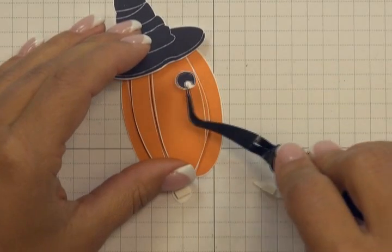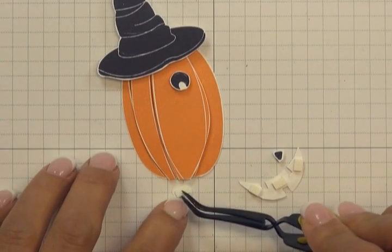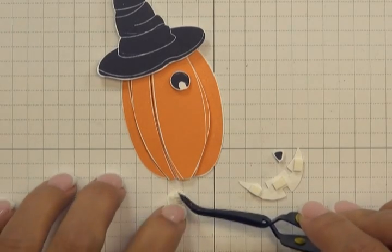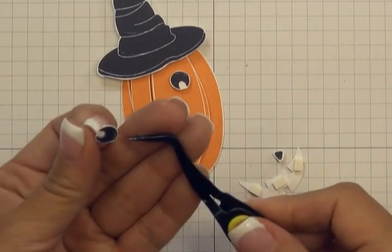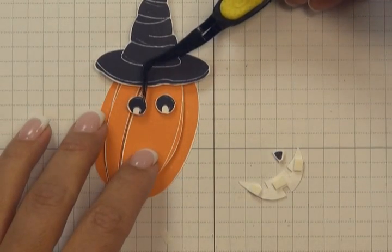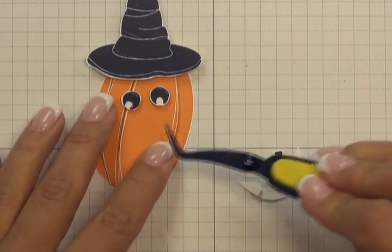And it's kind of helpful to have tweezers to help you both pick off the backing of the dimensional since the piece is so small, as well as place it on your pumpkin. Actually, I think I'm going to put that just a little bit lower down.